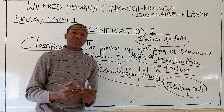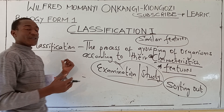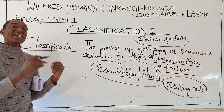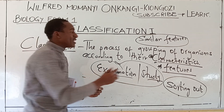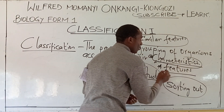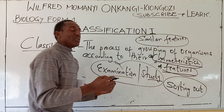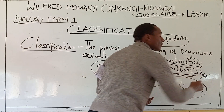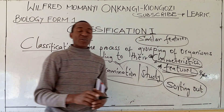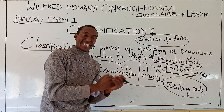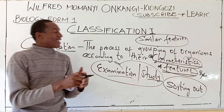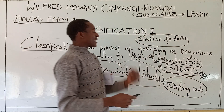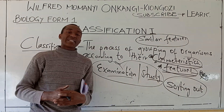Some students go wrong by defining classification as the process of grouping organisms according to their similarities. That is wrong, because suppose they don't have similarities. You go wrong by bringing in similarities instead of the correct term: features or characteristics.